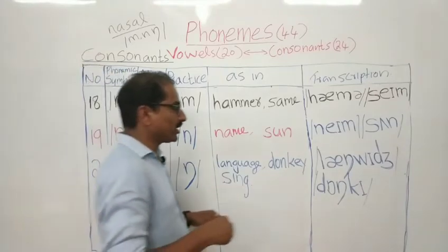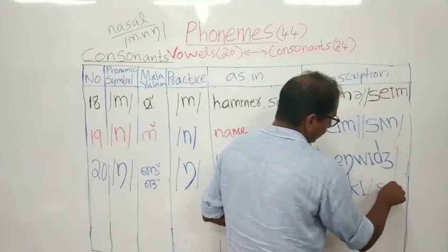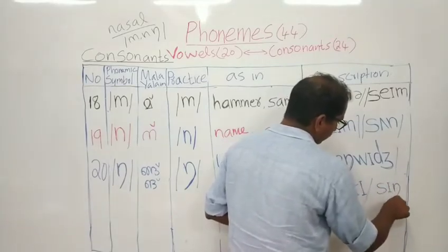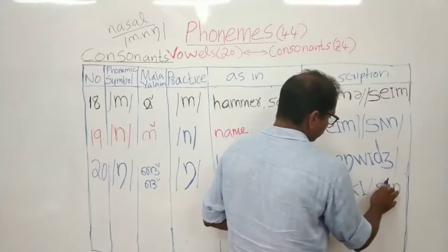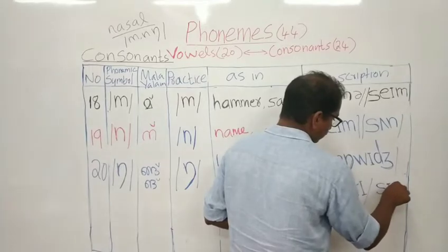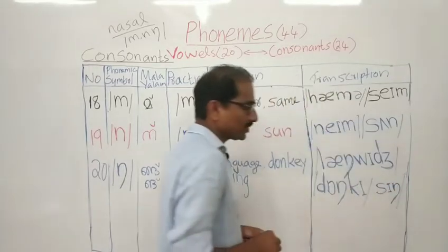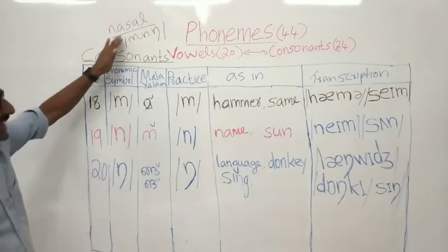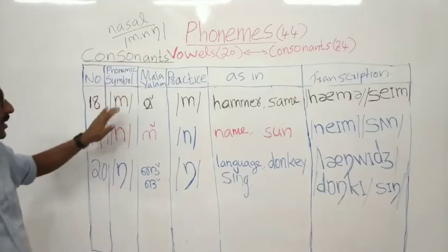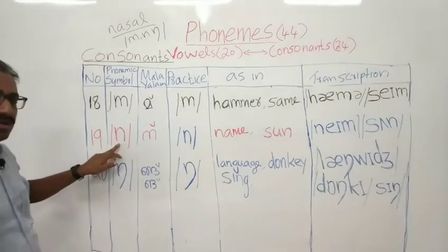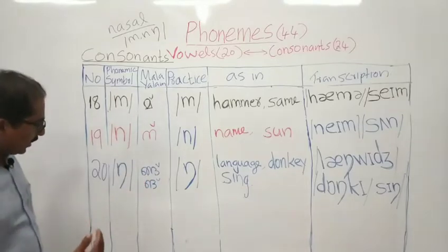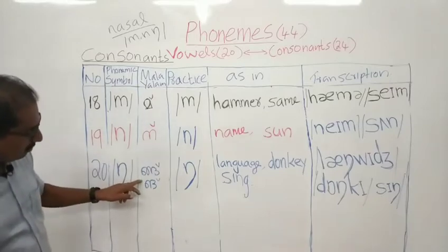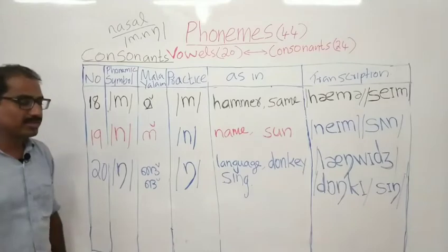As in 'sing'. Look at here — S, E, 'sing'. S, not 'see'. Then Ng — 'sing'. So these three sounds are known as nasal sounds: M, N, Ng. This is not N but the Ng sound. The three nasal sounds are M, N, Ng. There are two approximate Malayalam representations for this Ng sound — you can write either way. This is pronounced as the Ng sound, as in 'language', as in 'donkey'.